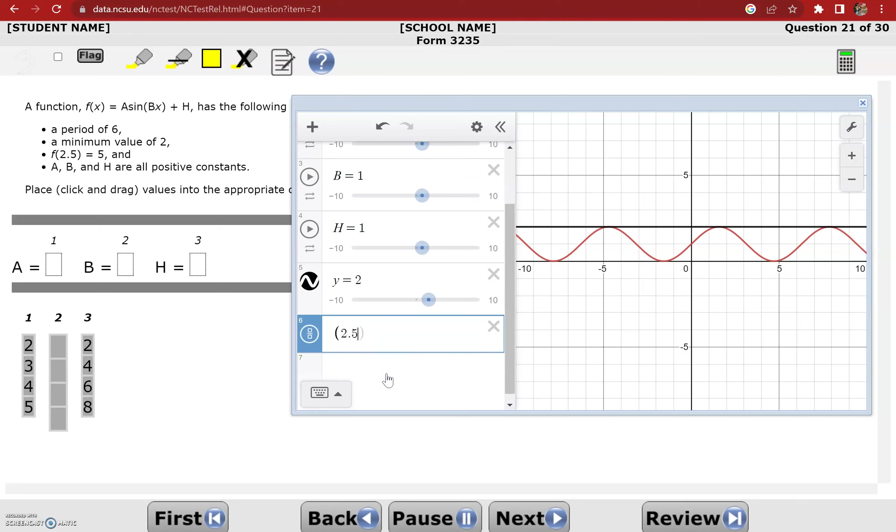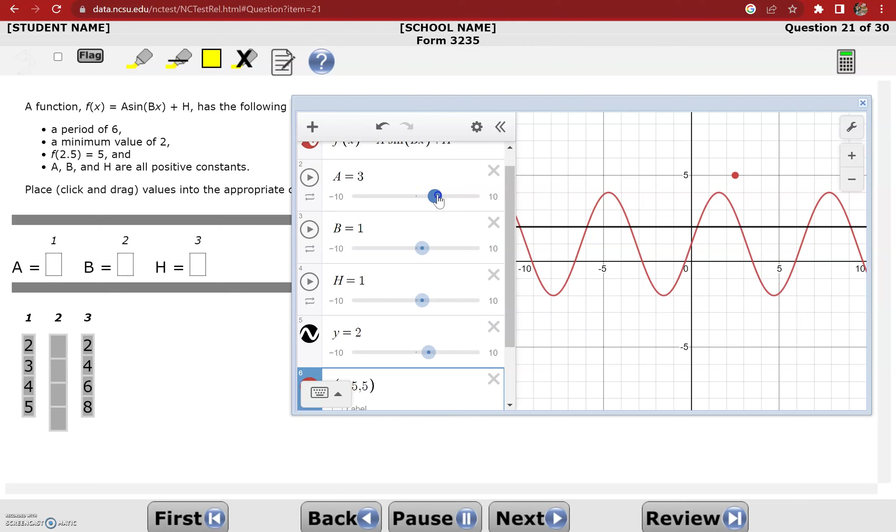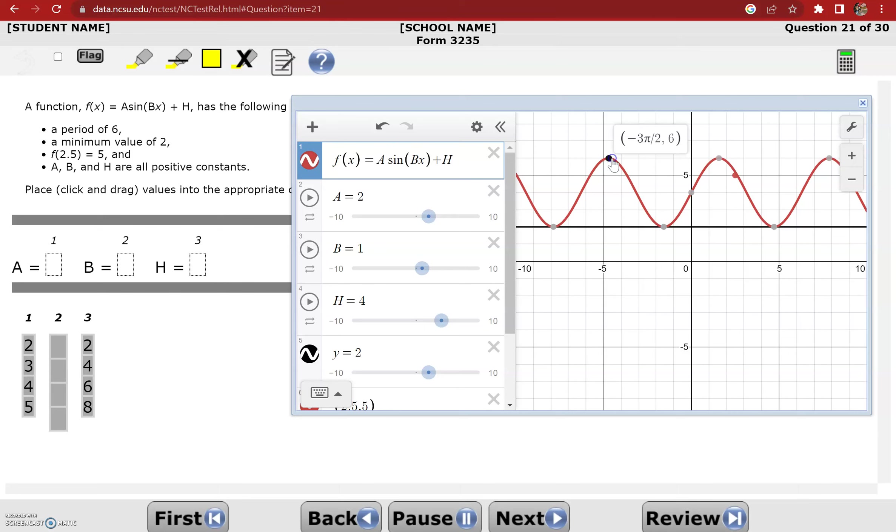And this f of 2.5 equals 5 means that the point 2.5 comma 5 must be on this graph. So I've got to play with these sliders to get that graph up above the black line and going through that point and having a period of 6. So let's try to just do the ones that are easiest first. That's making it a little bigger, but it's not shifting it up. So let me try this h. Now that's shifted up, but it's not hitting the right point. So let me bring my a back down, and let me change my h a little bit more. And now I'm hitting the point, I've got the right minimum value, so I need to test the period. This period from negative 3 pi over 2 to positive pi over 2, that would be a distance of 4 pi over 2, or 2 pi, which is not what I want. And b equals 1 isn't even one of the options.